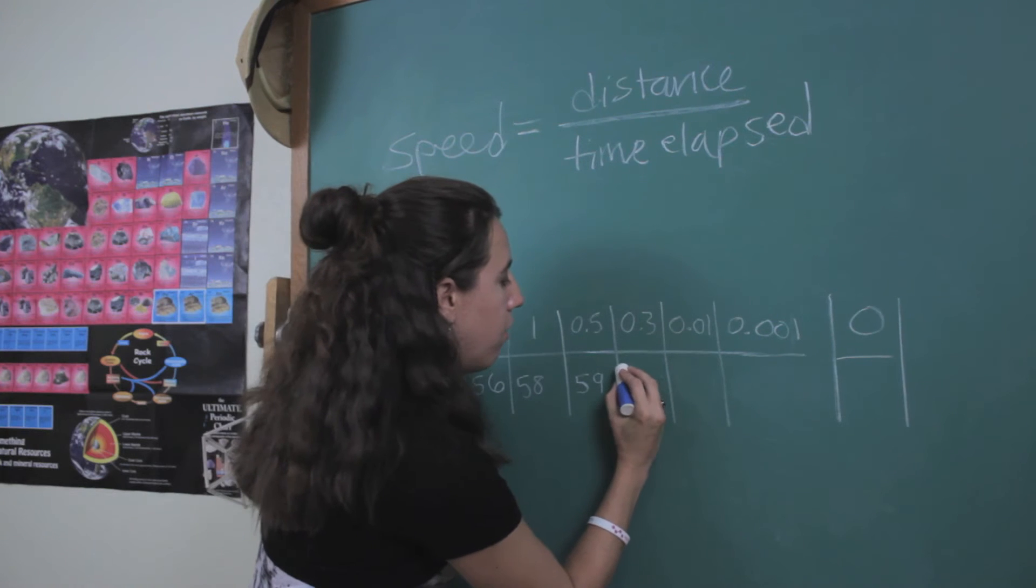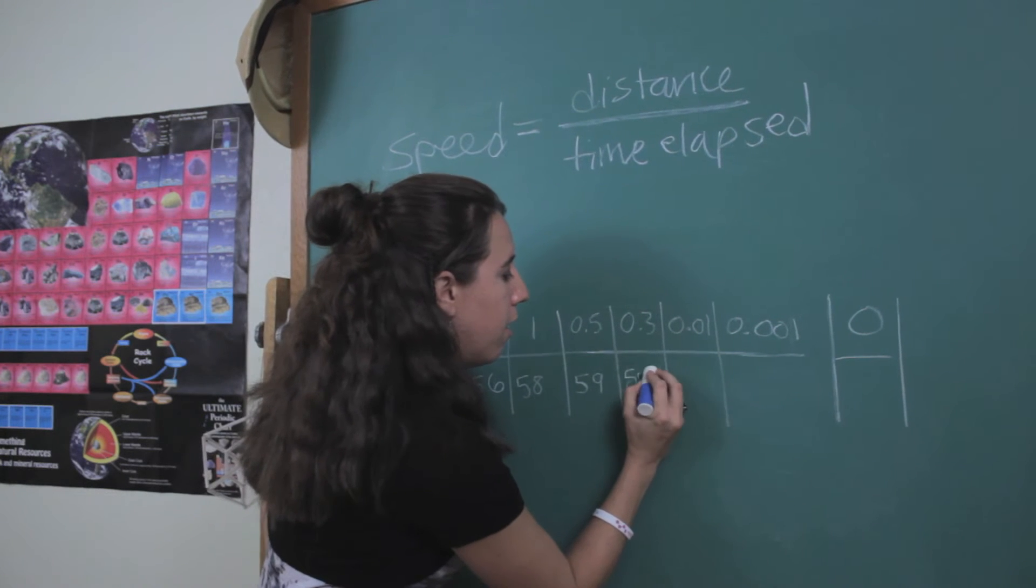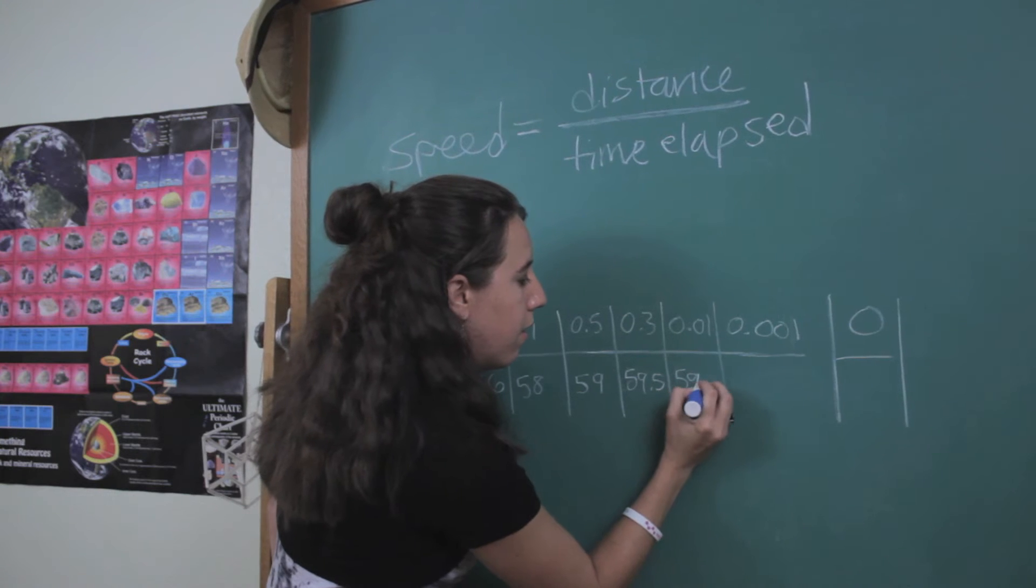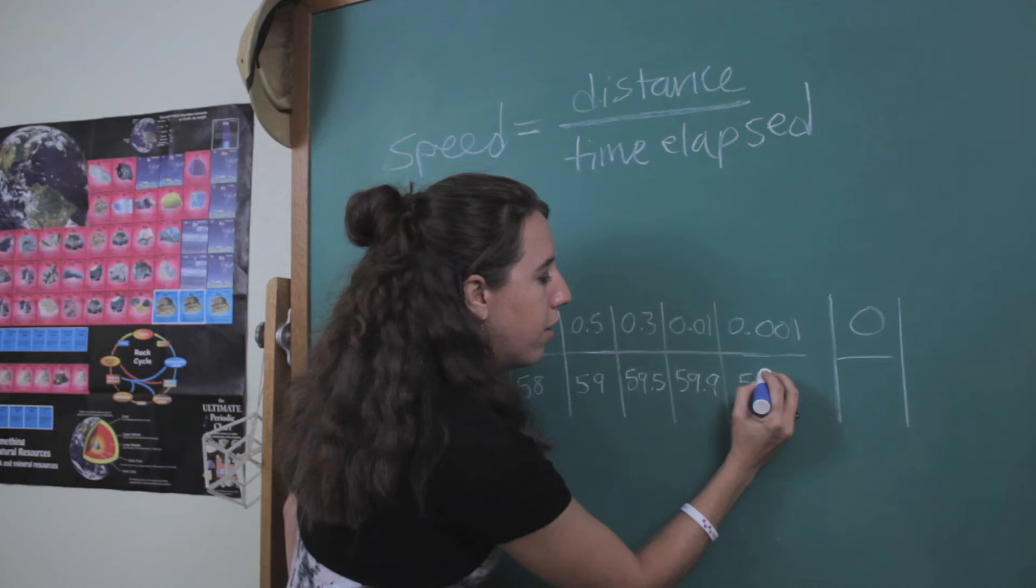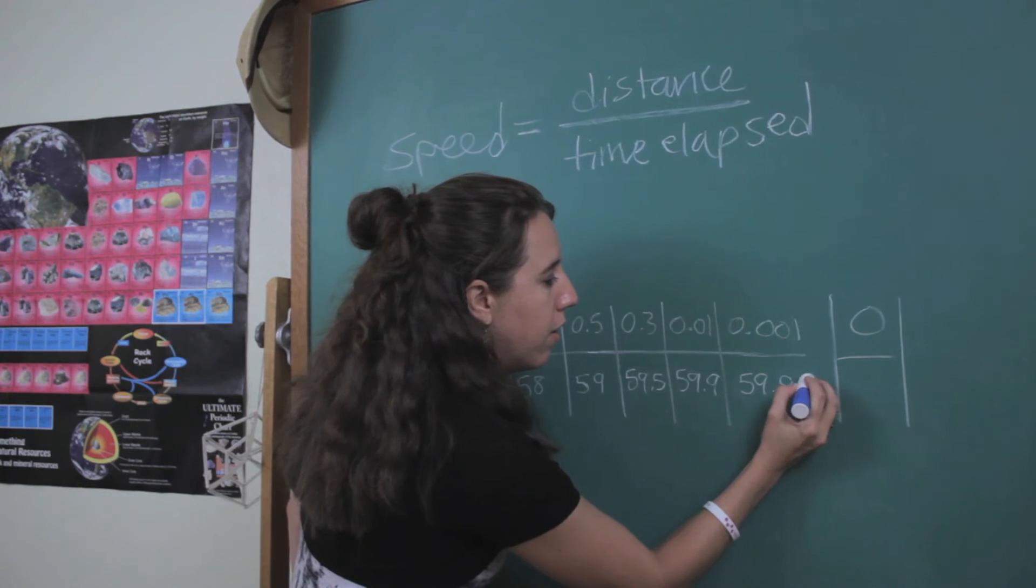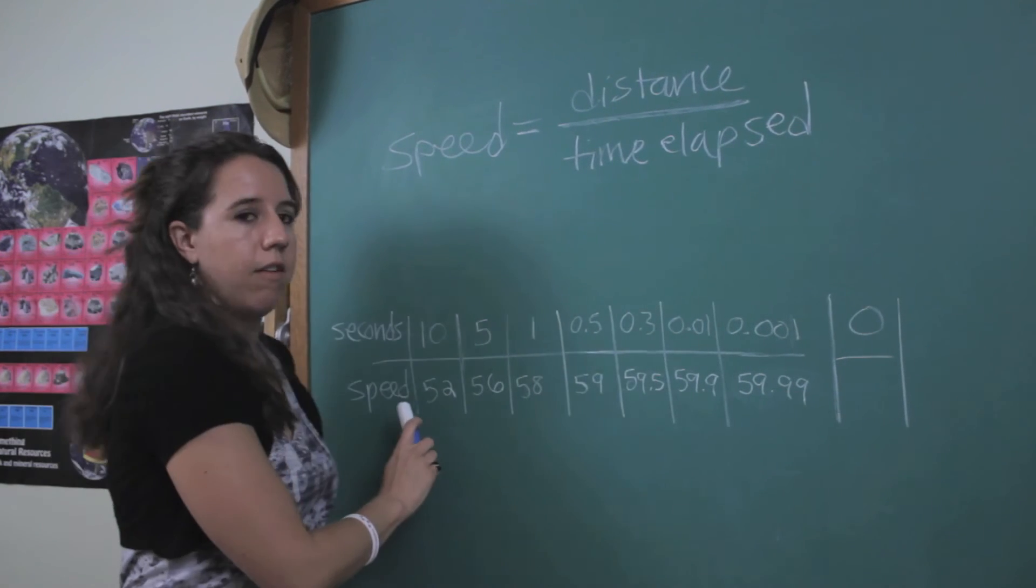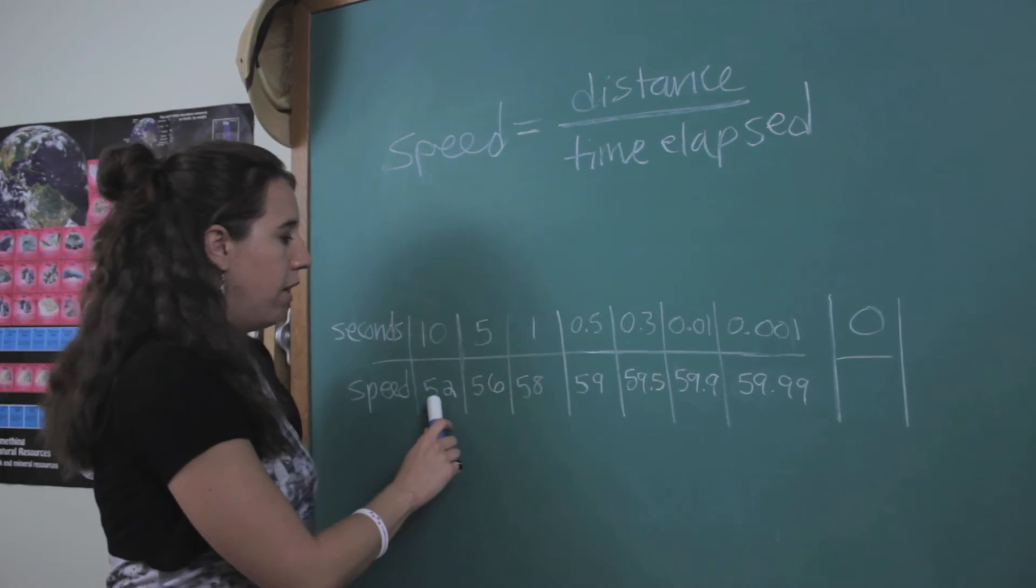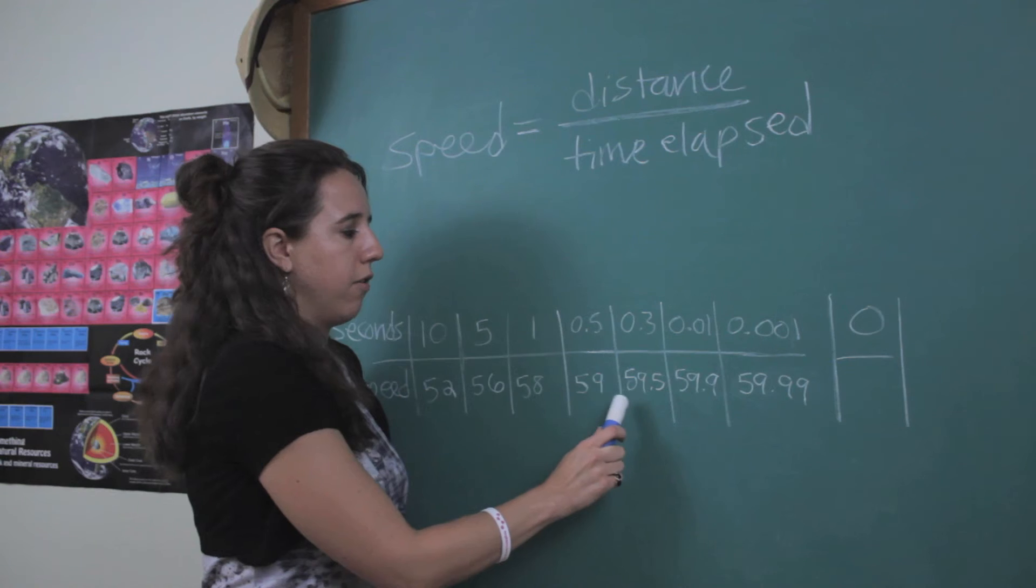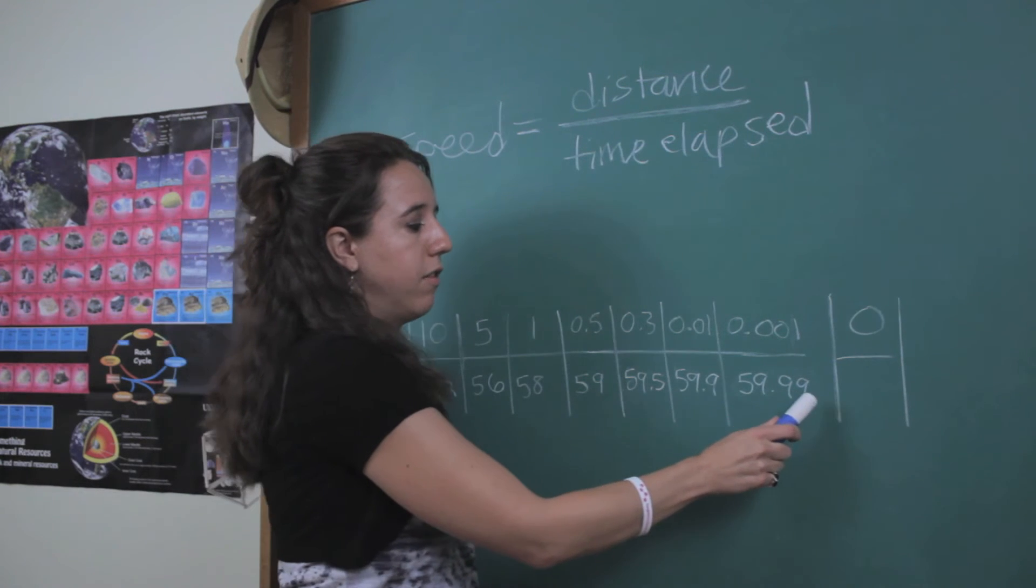And so correspondingly, my calculated speeds are going to start to converge. So when you look at all of the calculated speeds as we've been sneaking up on this zero over here, you can see pretty clearly that they're starting to get really, really close to 60.